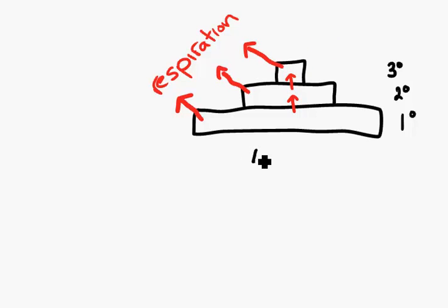So if we look at the amount of energy in trophic levels, it drops. Of course, energy is really hard to measure in ecology. We have to capture organisms, dry them, slice them thin, and burn them to measure the energy there — very destructive and a lot of work.